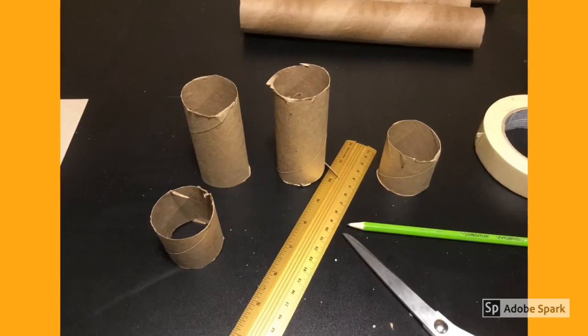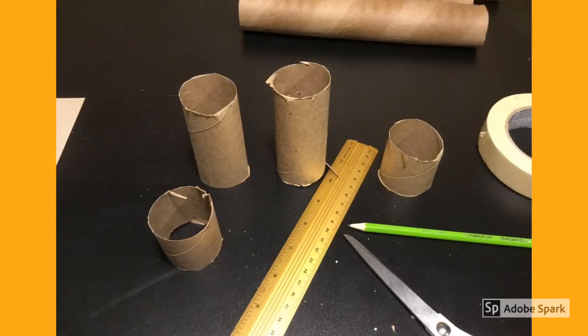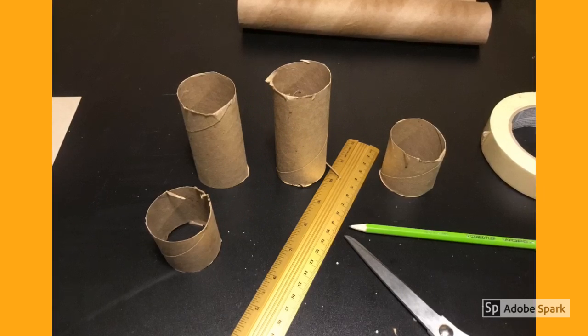Take one of the three cylinders you just created. Cut it in half. You'll then have two 10 centimeter high cylinders and two 5 centimeter high cylinders.